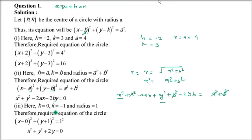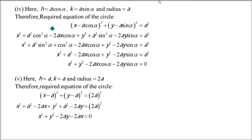The third part: center is (0, -1) and radius is 1. Put h as 0 and k as -1, and you will get the resulting equation.